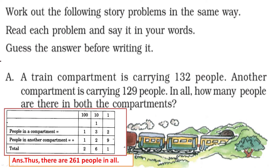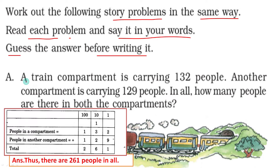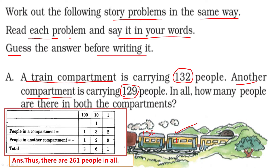Now a story problem. Work out the story problems in the same way — read each problem and say it in your own words, then guess the answer before writing it. A train compartment is carrying 132 people. Another compartment carries 129 people. In all, how many people are there in both compartments?